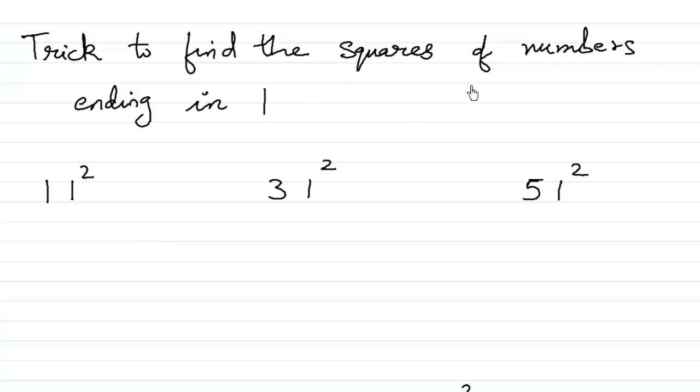There is a trick to find the squares of numbers that end in 1. If a number ends in 1, meaning the unit place is 1, for instance 11 or 31 or 51, there is a trick to find the square of that number in an easy way, in a faster way.